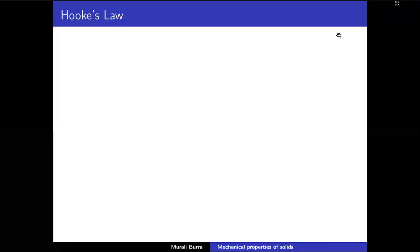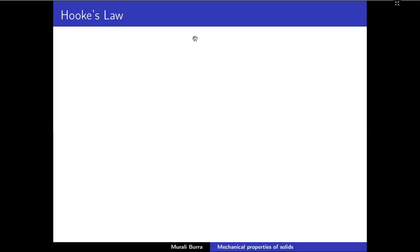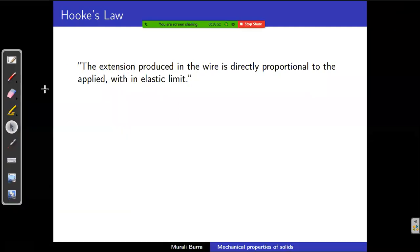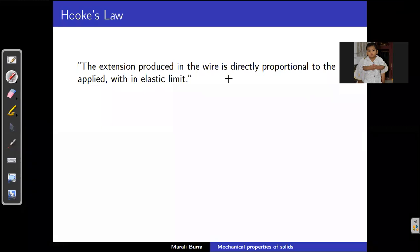Our next topic is Hooke's Law. We completed stress and strain in the last classes. Stress is roughly how much force is being applied, and strain is how much effect it is gaining. Based on those two things we will define Hooke's Law. If we apply stress, we get strain in the body — it may be longitudinal, tangential, or volumetric.